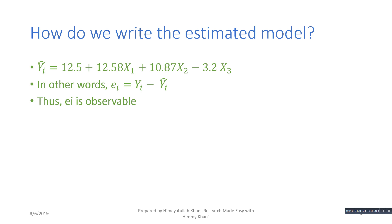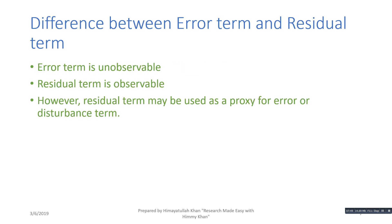The residual term or e_i is observable — we can observe it, estimate it, compute it, and calculate it. The main difference between the two is that the error term is unobservable, but the residual term is observable because we can calculate it by subtracting y_i-hat from y_i. They are similar in the sense that the residual term may also be used as a proxy for the error term — as a proxy for the disturbance term — so in that sense they are equal to each other.